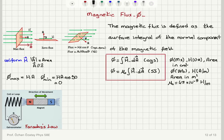We already talked about the conversion between these fluxes, but as a reminder: 1 Weber is equal to 10⁸ Maxwells. That is the conversion between these two units.